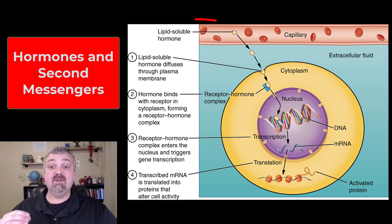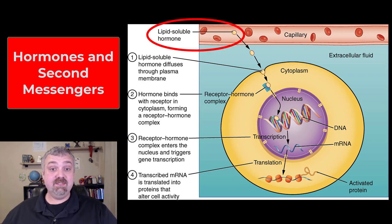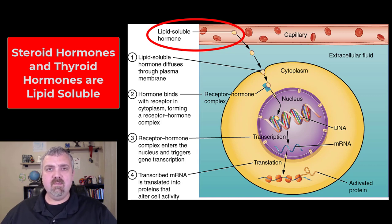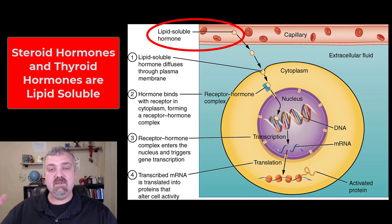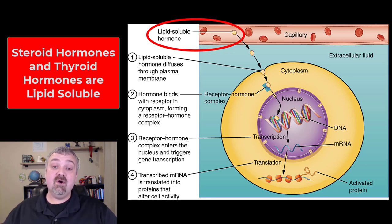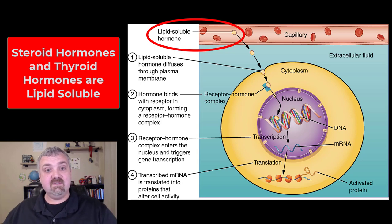We're going to start with the easy ones, the ones that are lipid soluble. Steroid hormones and thyroid hormone are both lipid soluble, meaning they can walk right through. They don't need a receptor on the surface. They can walk right into a cell and even right into the nucleus if they need to. Steroid hormones can do so because they're lipids and likes dissolve likes, so lipid soluble.